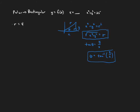For the equation r equals 4: replacing r with the square root of x squared plus y squared gives square root of x squared plus y squared equals 4. Squaring both sides gives x squared plus y squared equals 16. We want to solve for y, but we can recognize this is a circle centered at the origin with radius 4, and we're good to go.